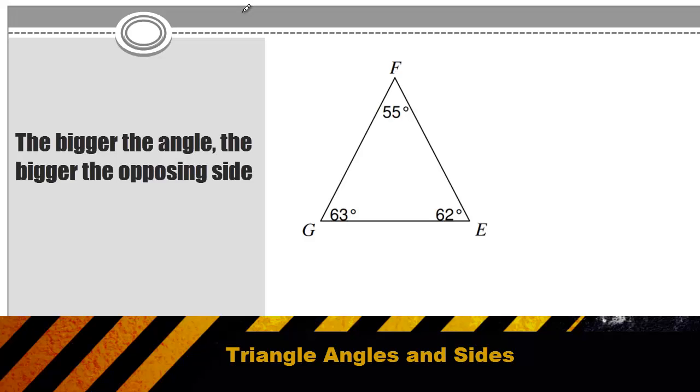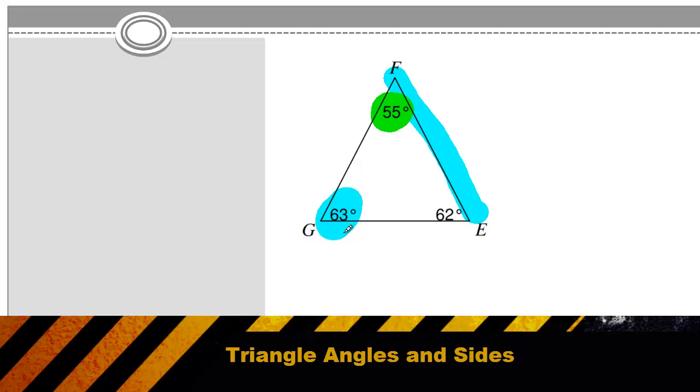The largest angle opens up to the largest side. So in this case, our largest angle is 63 degrees. That means that f to e is our largest side. And this 55 degrees, that's our smallest angle, so our smallest side is g to e.